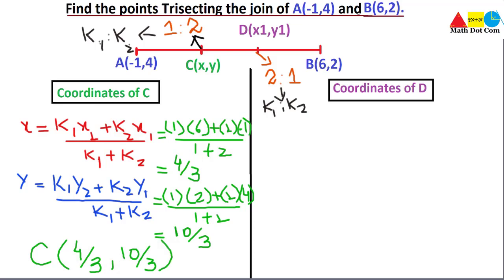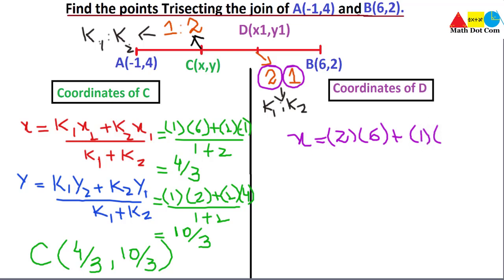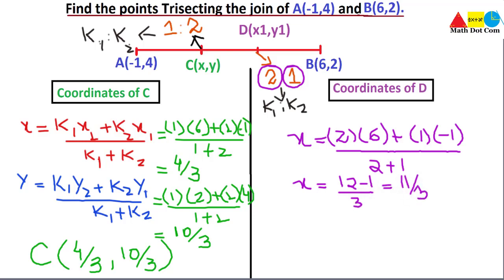So C has the coordinates 4/3 and 10/3. This is one point that trisects the join of points A and B. Now we will find the coordinates of point D. For the x-coordinate: k1 is 2, x2 is the x-coordinate of B which is 6, k2 is 1, and x1 is the x-coordinate of A which is minus 1, divided by k1 plus k2, that is 2 plus 1 equals 3. So we get 12 minus 1 divided by 3, which gives 11 over 3. This is the x-coordinate of point D.